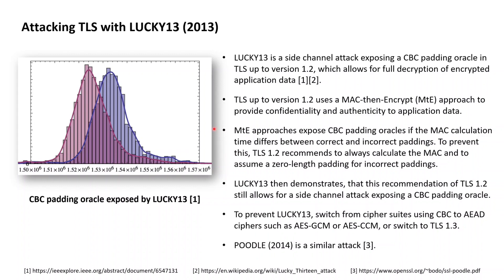Unfortunately, this was wrong. Lucky 13 demonstrated that the measures proposed by TLS 1.2 still allowed for such a side-channel attack, and the CBC padding oracle exposed by Lucky 13 is shown in the graph on the left side of this slide. This CBC padding oracle exposed by a time-based side channel can then be used by a man-in-the-middle attacker to recover the encrypted application data exchanged between a client and a server. Hats off to the researchers behind Lucky 13 to pull this off.